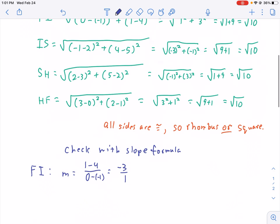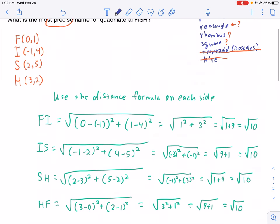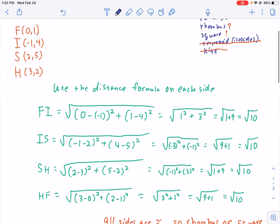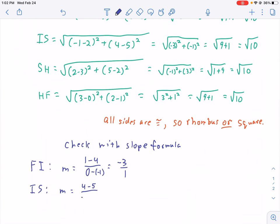Let's find IS. Let's see if we get the same thing. So, it looks like we'll have 4 minus 5 over negative 1 minus 2. Well, that's negative 1 over negative 3, but a double negative becomes positive.